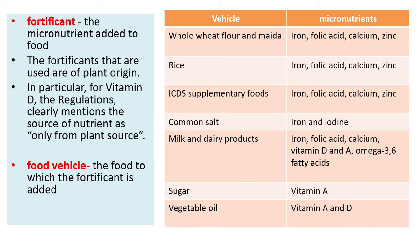The food to which the fortification is added is known as the food vehicle. On the right side you can see a chart listing food vehicles and their micronutrients: whole wheat flour and maida with iron and folic acid; calcium and zinc; rice; ICDS supplementary foods; common salt; milk and dairy products; sugar; and vegetable oil — each paired with the respective micronutrients added.